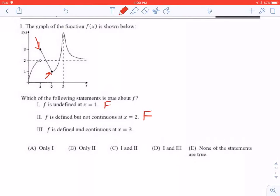3, f is defined and continuous at x equals 3. Both of those are wrong. The vertical asymptote here at 3, it's not continuous there. Those are both false, so the only answer could be is C.